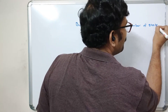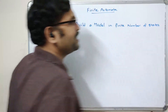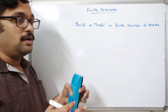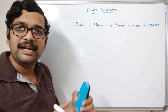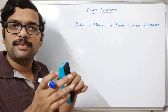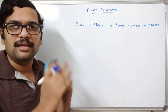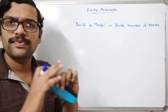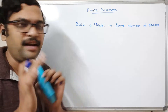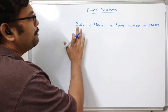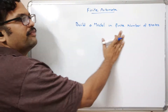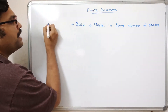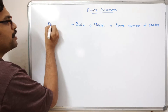These steps are what we call states. By giving one input, the state will be changing from one to another. So here everything will be considered in terms of states. Building a model in a finite number of states is called finite automata.